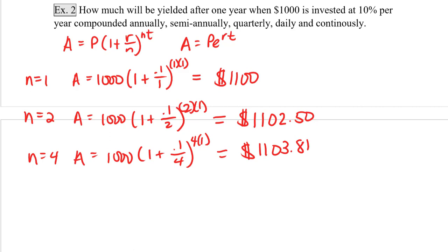Next we want to calculate this when we're compounding daily. That means that n would be equal to 365, so A equals 1,000(1 plus 0.1 over 365) to the 365 times 1. And this is going to be equal to $1,105.16.